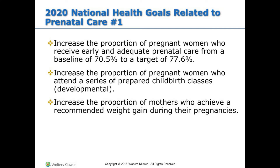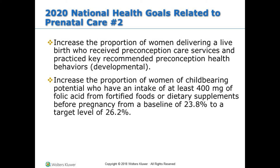2020 National Health Goals related to prenatal care: increase the proportion of pregnant women who receive early and adequate prenatal care from a baseline of 70.5% to a target of 77.6%. Increase the proportion of pregnant women who attend a series of prepared childbirth classes. Increase the proportion of mothers who achieve a recommended weight gain during their pregnancies. Increase the proportion of women delivering a live birth who received preconception care services and practiced key recommended preconception health behaviors. Increase the proportion of women of childbearing potential who have an intake of at least 400 mg of folic acid from fortified foods or dietary supplements before pregnancy, from a baseline of 23.8% to a target level of 26.2%. Include support people.